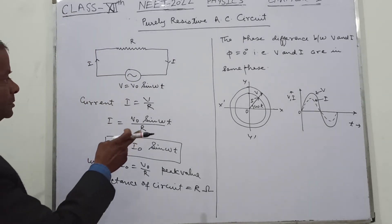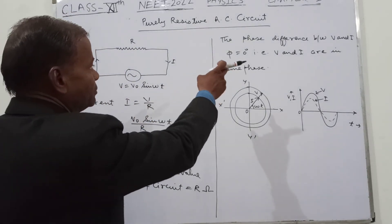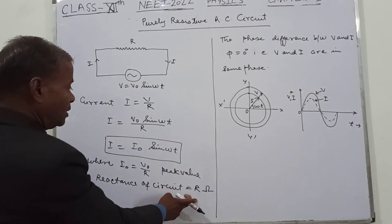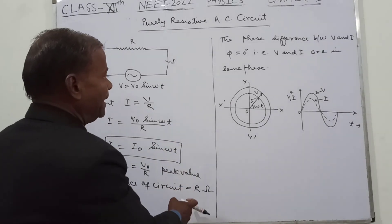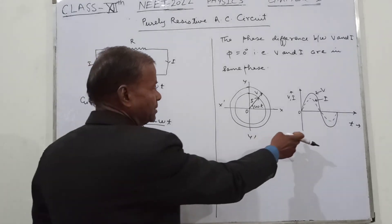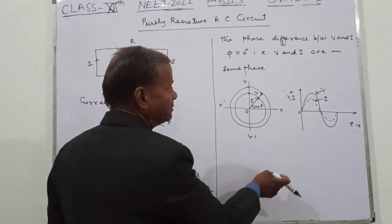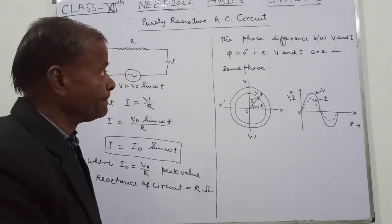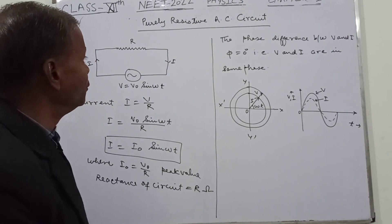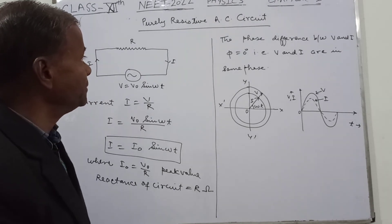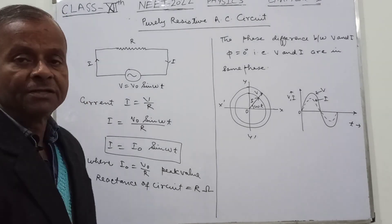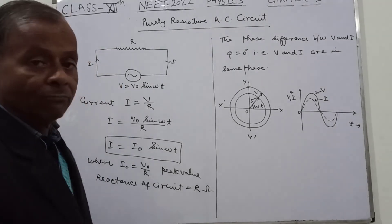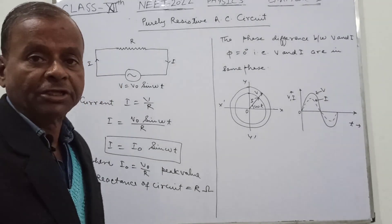So the phase difference is equal to zero and the resistance of the circuit is equal to R. This is the purely resistive AC circuit. Thank you.